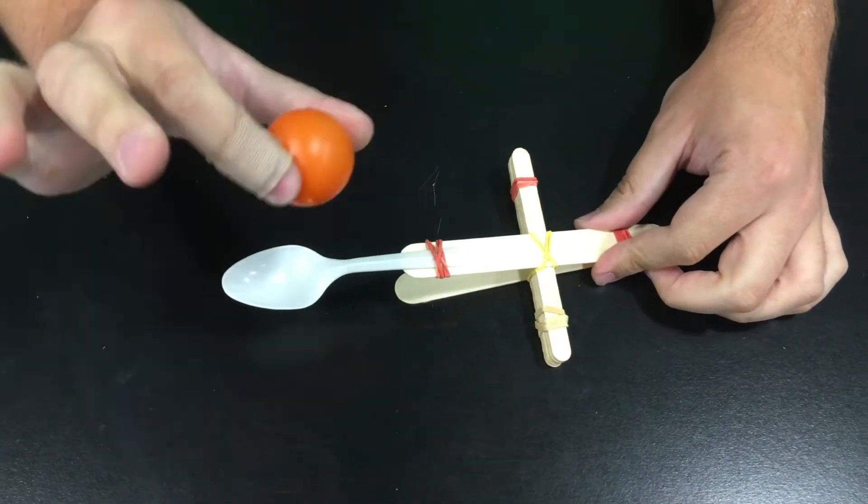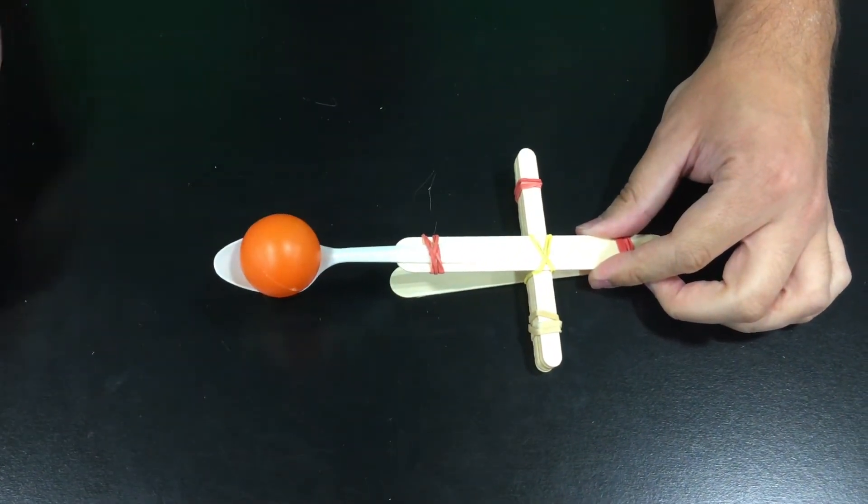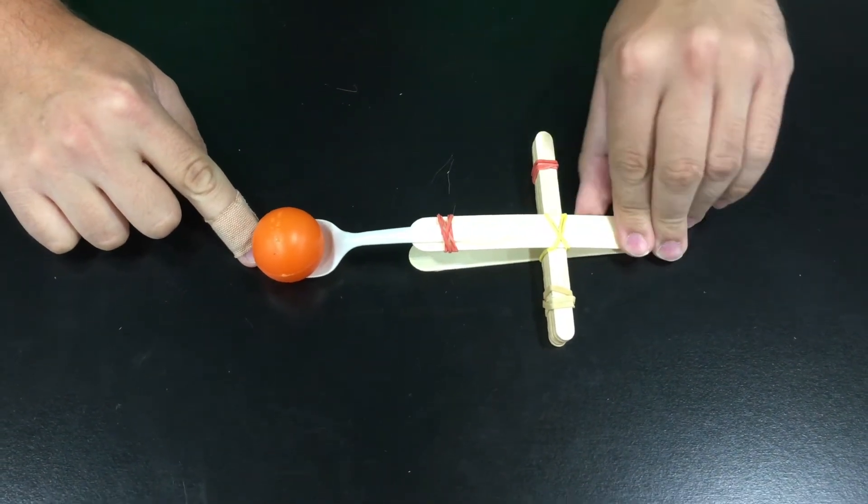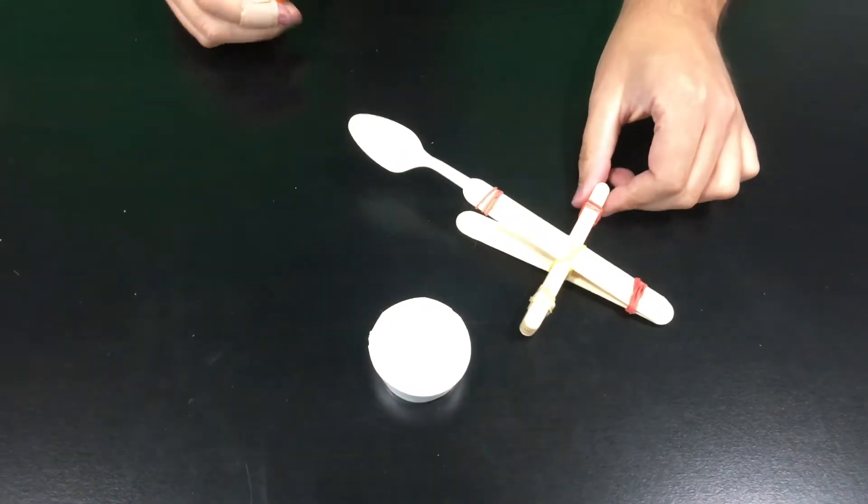Now that you've got that complete, you're going to put your ping pong ball onto the spoon, pull your spoon back with your finger, and launch.